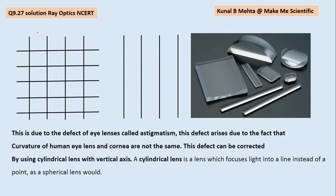Hello all. In this video we are going to discuss question number 9.27, standard 12 physics, ray optics. Here we are being told that if there is an eye which is suffering from a defect known as astigmatism, and if it sees these kind of crossed wires,